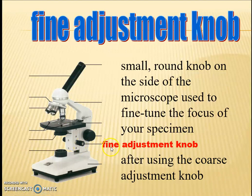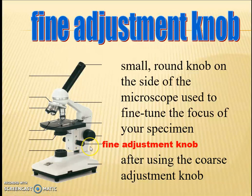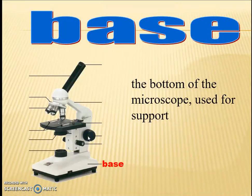The fine adjustment knobs are the small round knobs on the side of the microscope used to fine-tune the focus of your specimen. After using the coarse adjustment knob to get close to focus, you use the fine adjustment knob to fine-tune it.